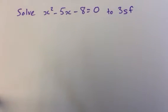Hi, and welcome to Mr. Minute Maths. We've got another question here that we're going to solve, and I've got some guest presenters. What is the question? Solve x² - 5x - 8 = 0 to three significant figures.